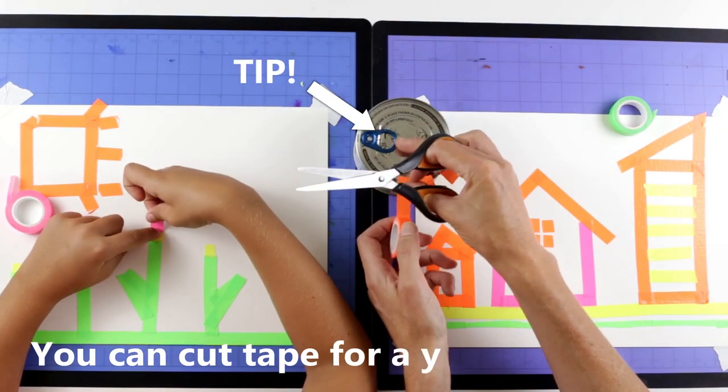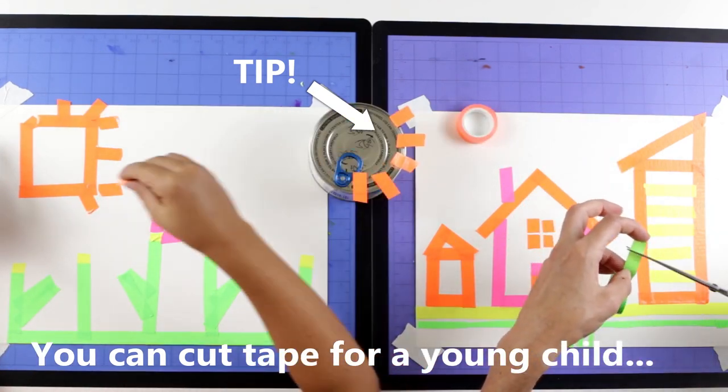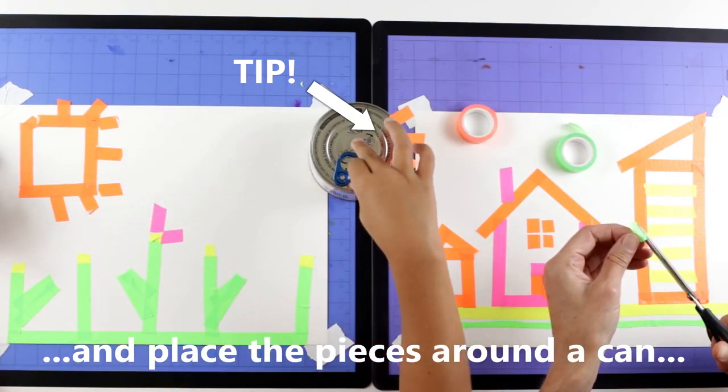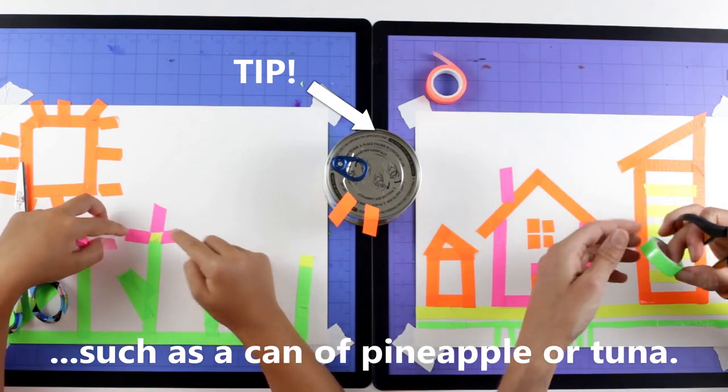Here's a tip you might like to try. Cut pieces of tape for a young child and put them around this can.